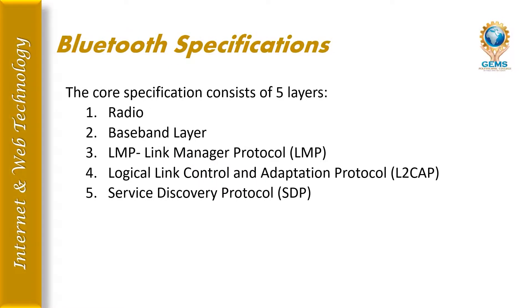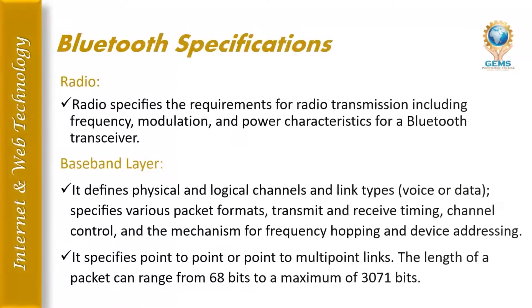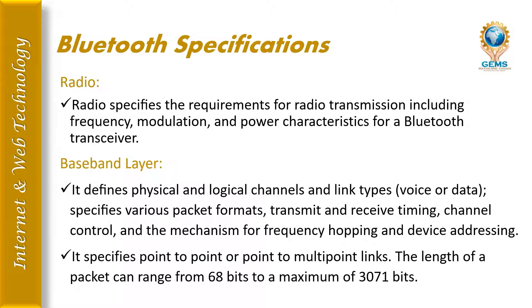The core specification consists of five layers: radio layer, baseband layer, link manager protocol (LMP) layer, logical link control and adaptation protocol (L2CAP), and service discovery protocol. The radio layer specifies requirements for radio transmission, including frequency, modulation, and power characteristics for a Bluetooth transceiver.